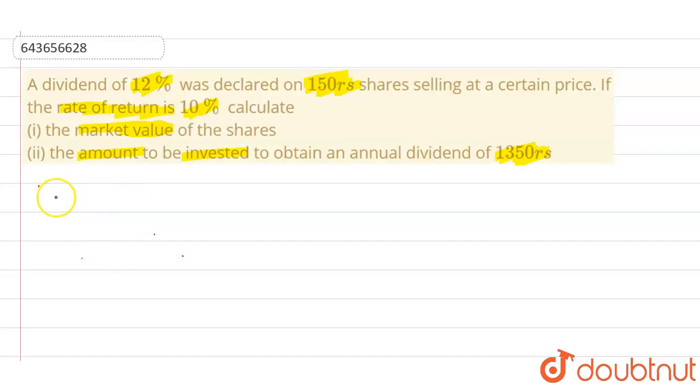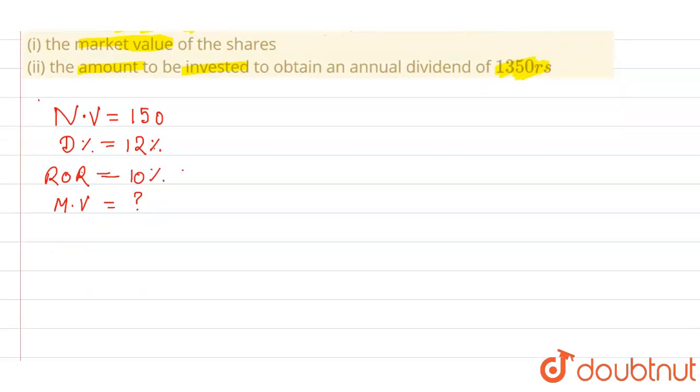Okay, so first let's understand what the question is saying. The nominal value of any share is 150 rupees, dividend percent is 12%, and rate of return (ROR) is 10%. You have to calculate the market value.